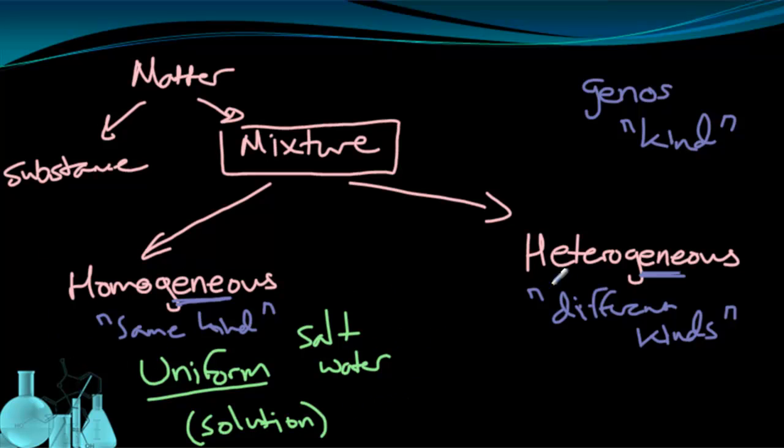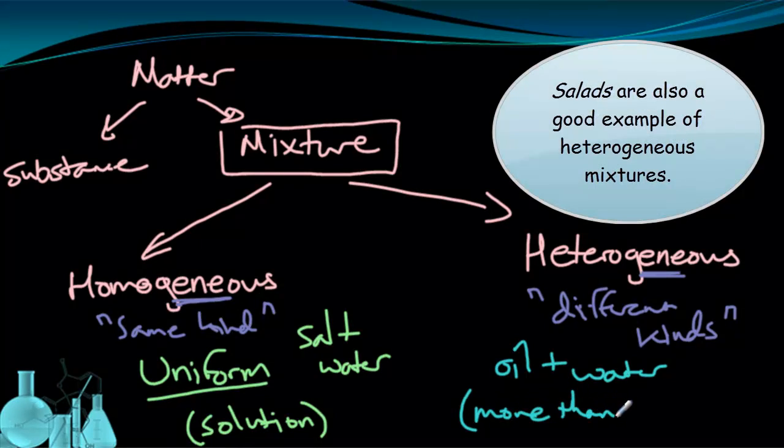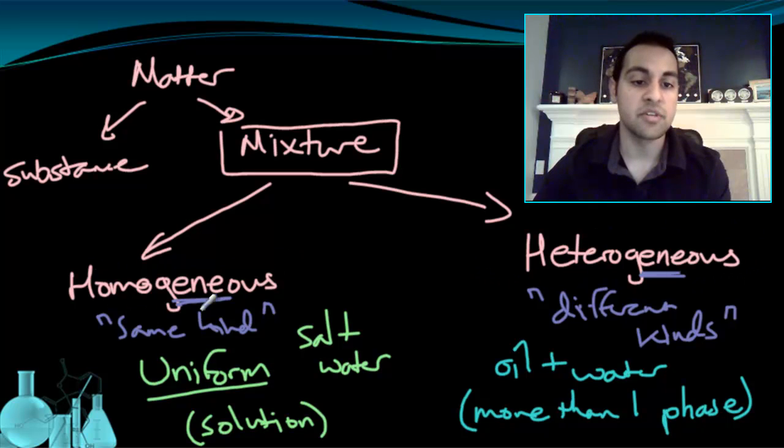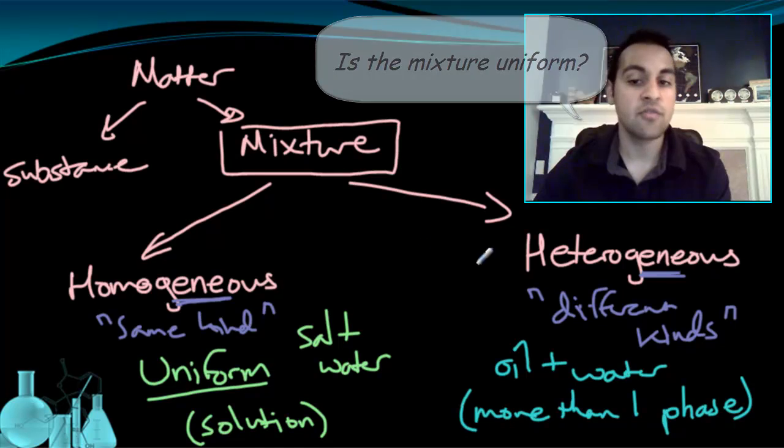A heterogeneous mixture, different kinds, is one that is not uniform. So it has visibly different components in it. You can actually just by looking at it in a heterogeneous mixture, you can see some of the different components. So you can tell that it's not the same everywhere. An example of this, if we put oil and water together, there's going to be a layer of oil and a layer of water. So they're mixed, but you're going to see that they're not evenly mixed all the way through. Sometimes this is referred to as having more than one phase. So these are our two types of mixtures: heterogeneous mixtures and homogeneous mixtures. The question that helps you identify which is which is if you can ask yourself, is this mixture uniform? If it is uniform, it's homogeneous. If it is not uniform, it's heterogeneous.